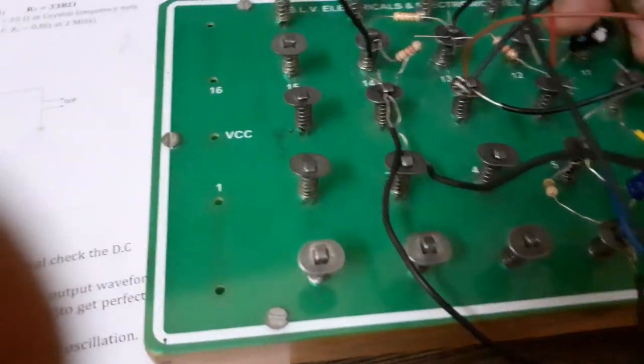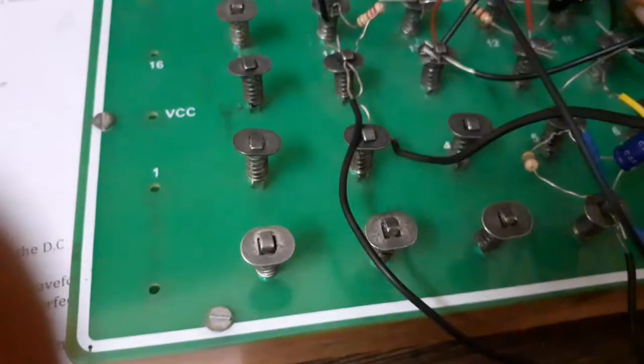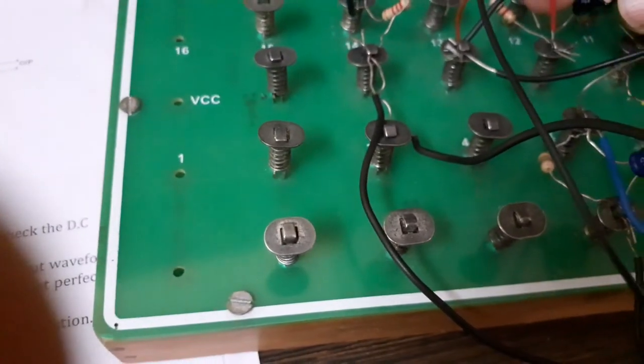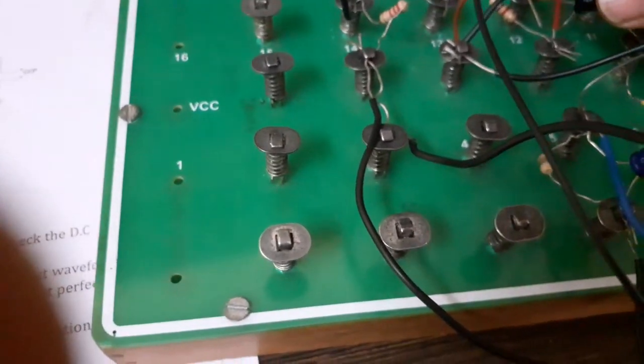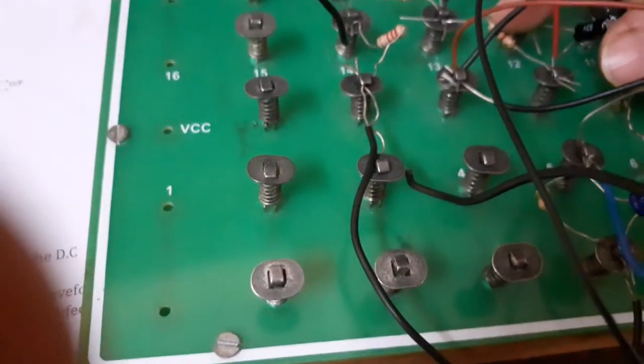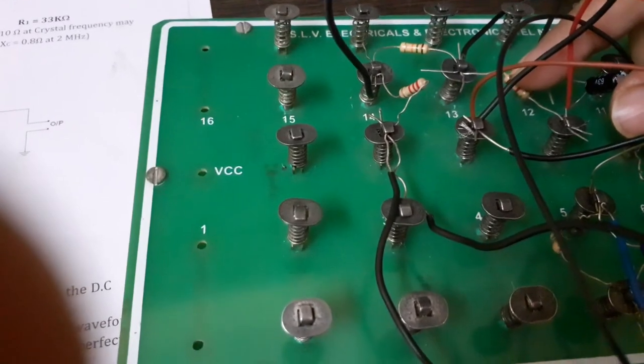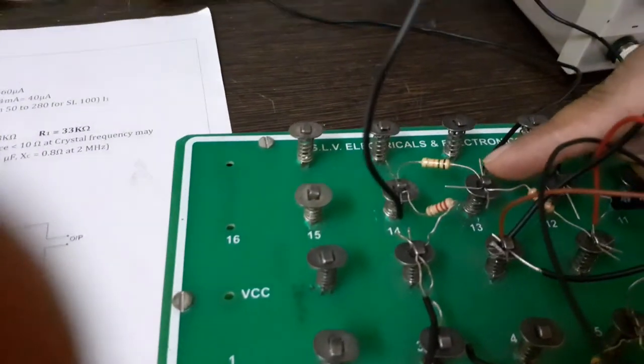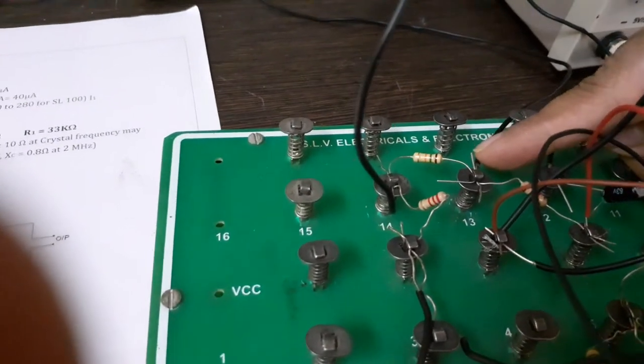Now the connections are, with your collector you can connect a resistor of 1k. This is your resistor of 1k. This is your resistor of 1k. And you have to give a fixed power supply of 12 volt with the, in the, with that 1k.